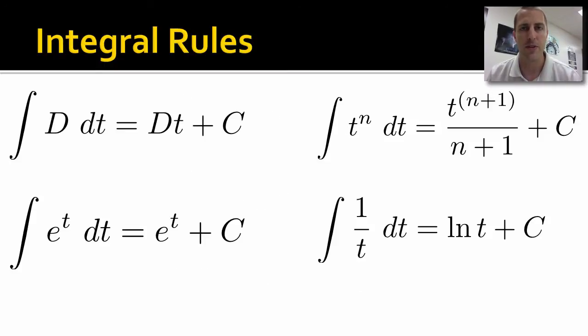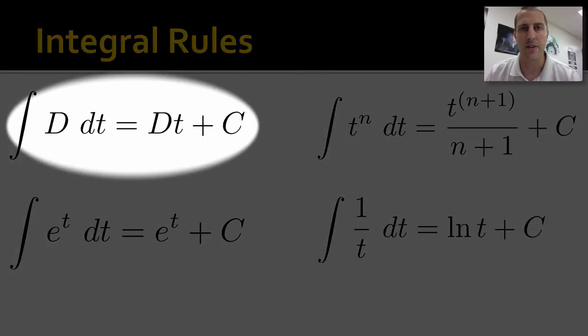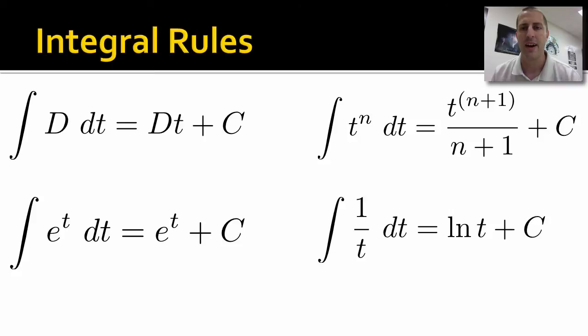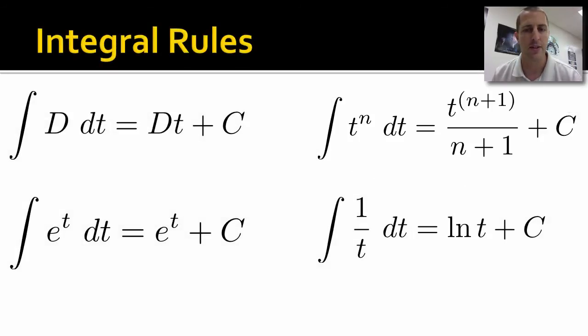Here's four rules, four integrals. These are similar to the derivative rules, just opposite. The integral of a constant is just the constant times the variable. So integral of D dt equals Dt + C. You have to add plus C. C is just any constant. We don't know what it is yet. We'll get to that. The integral of t^n is t^(n+1)/(n+1) + C. And the other rules, you can see those there.